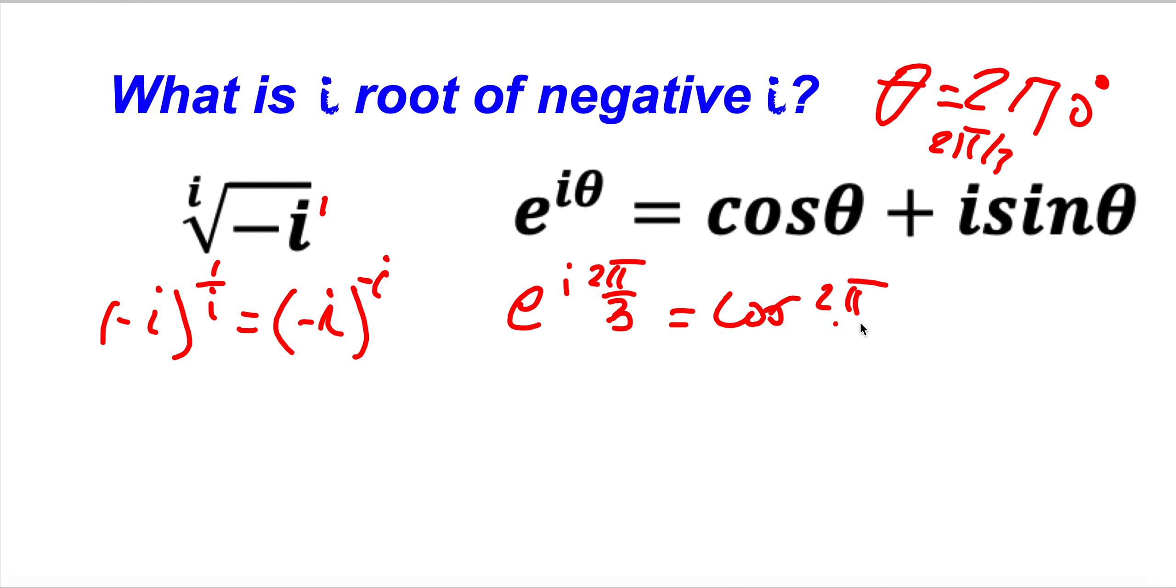2 pi over 3 plus i sine 2 pi over 3. And now this is going to be equal, cosine 2 pi over 3 is 0 plus i sine 2 pi over 3 is minus 1. This is minus i. So what does it mean? e to the i exponent theta, or respectively, let's...